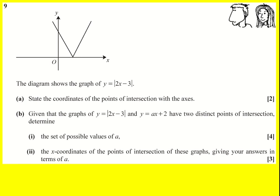We have y equals the modulus of 2x minus 3, and we're given a little sketch. I would always advise drawing a sketch in this situation just to set out what is going on. Part (a) asks us to state the coordinates of the points of intersection with the axes.